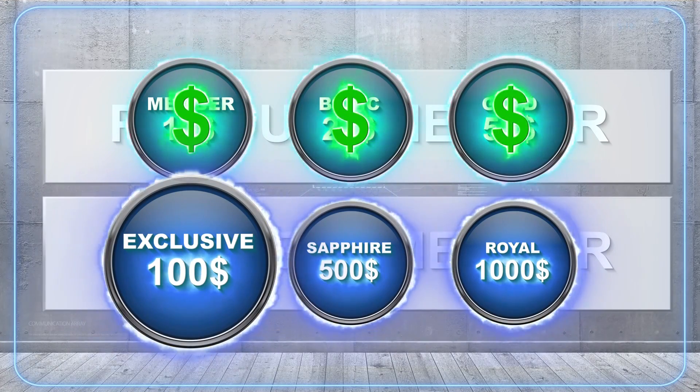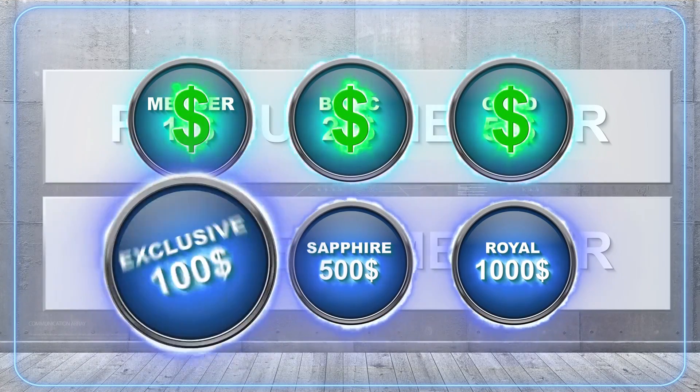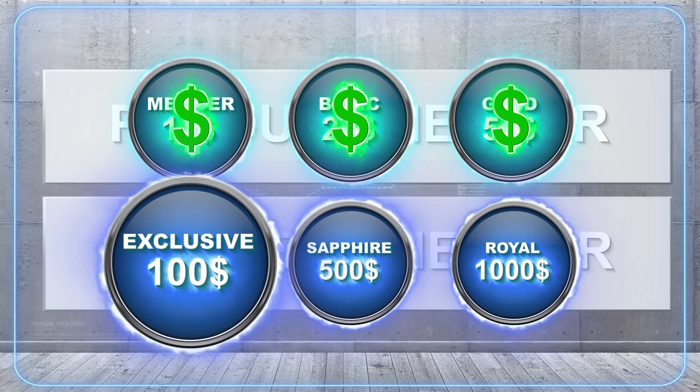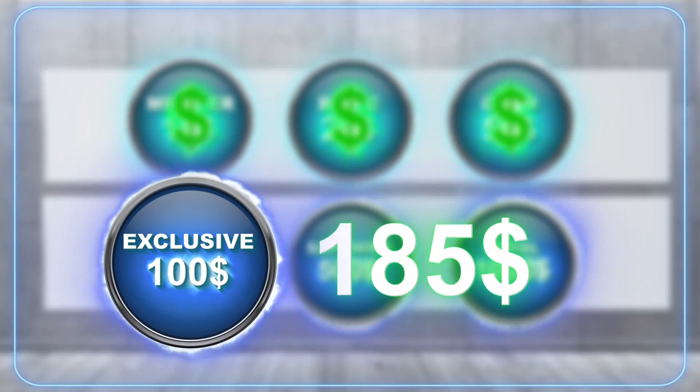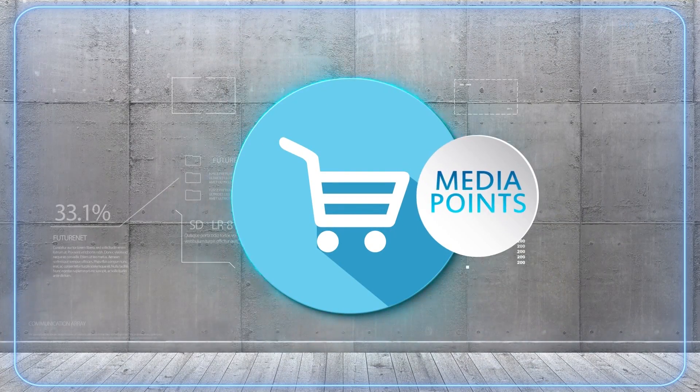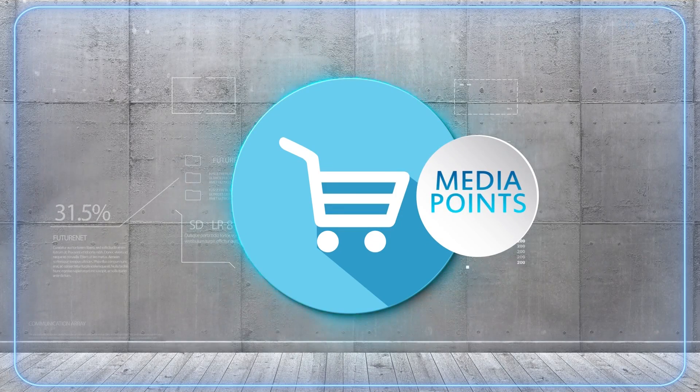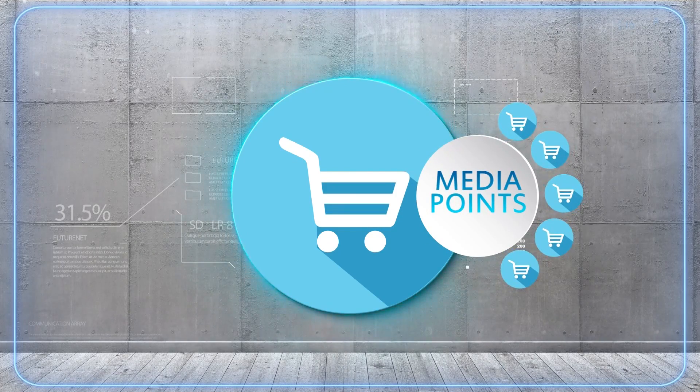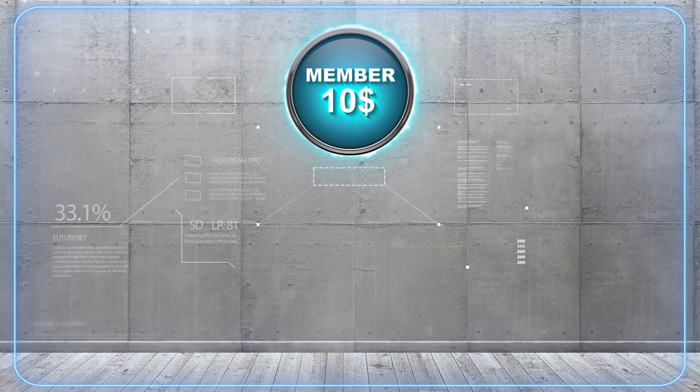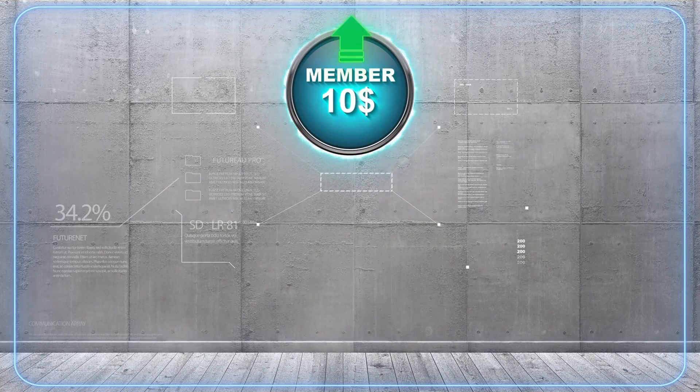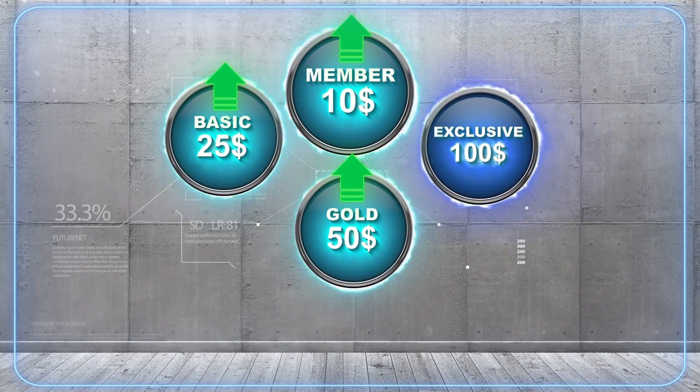This means that as a business partner at the exclusive level, you start your business from the purchase at the level of $185. For each purchase of the products, you will receive Media Points. Media Points can be exchanged for any FutureNet products. You can also purchase a lower level than Sapphire and use your proceeds from commission to upgrade to higher levels.